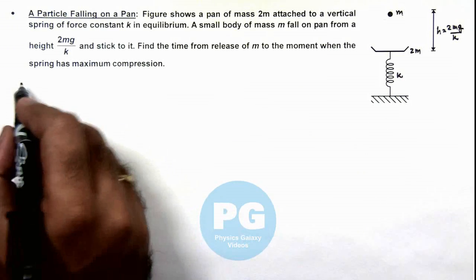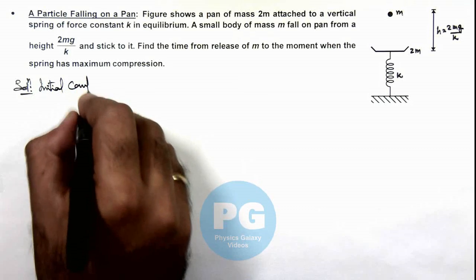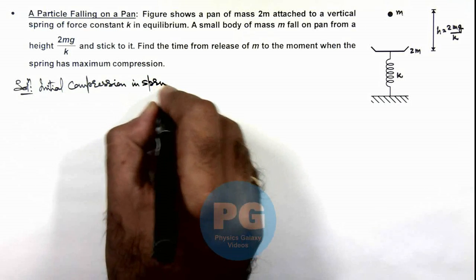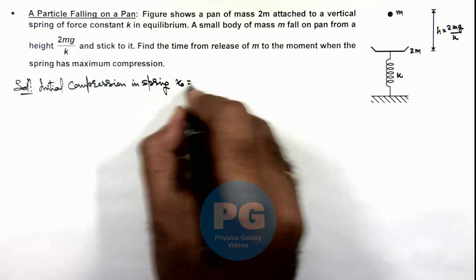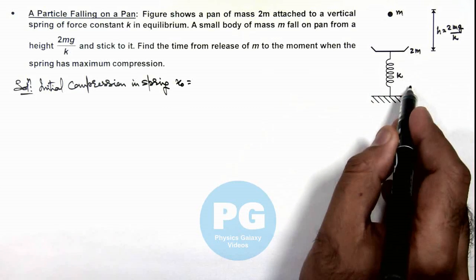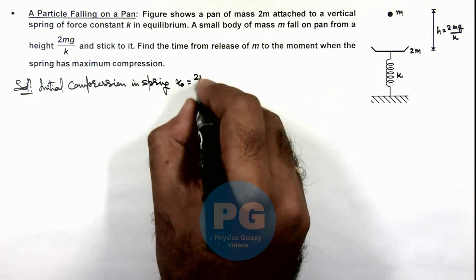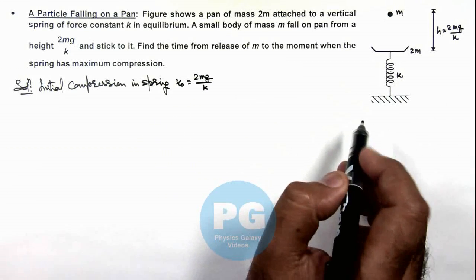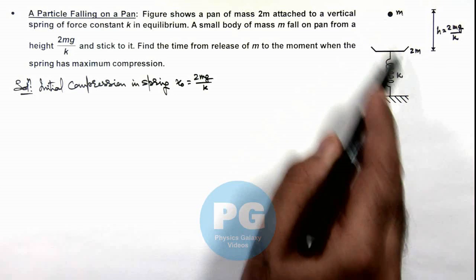Initially the spring will have some compression. The initial compression in the spring, x₀, is due to the weight of the pan. The downward force is 2mg and the upward force is kx₀, so x₀ = 2mg/k. When the small mass m also falls onto it, the new equilibrium position will be at 3mg/k.